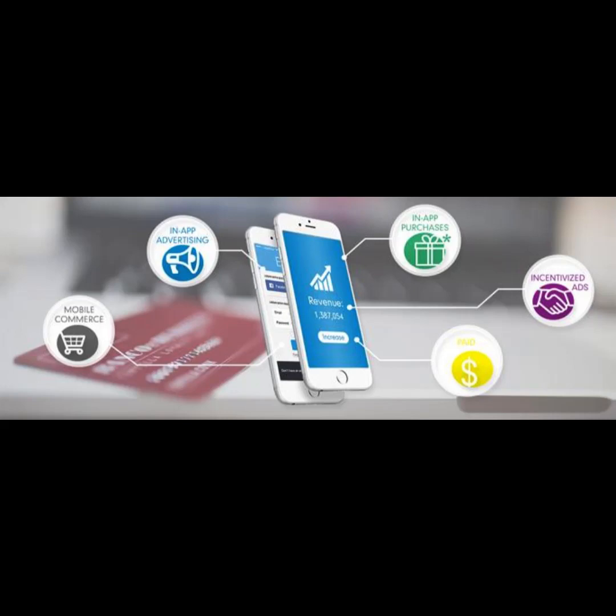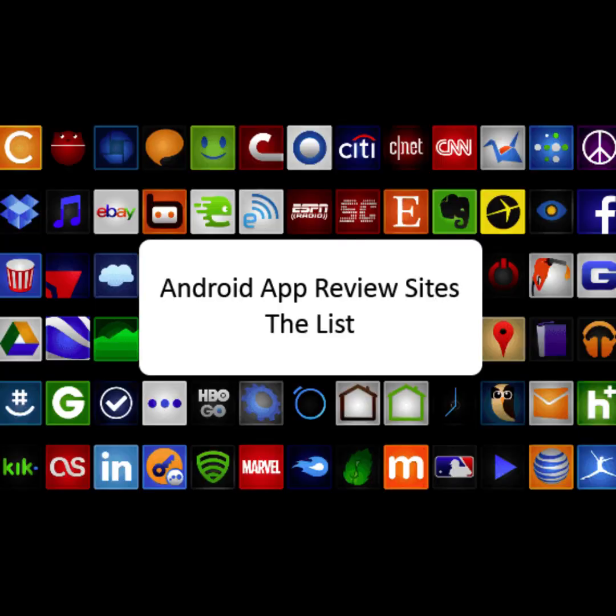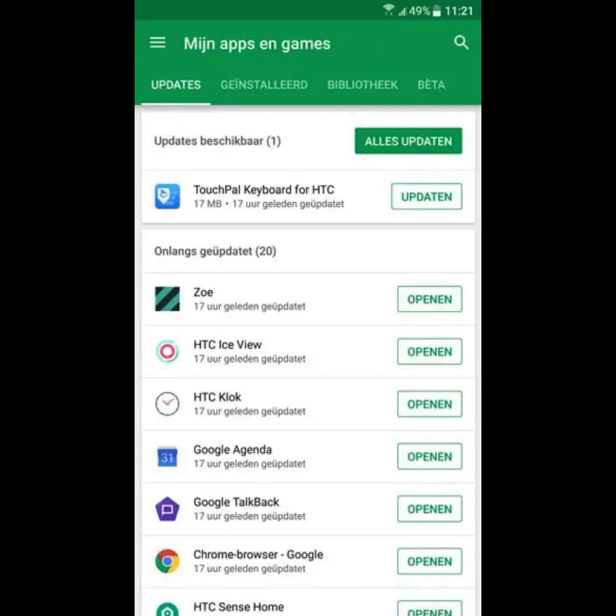Set the price or pricing strategy accordingly. Step five: promote the app through app store optimization (ASO), social media, online advertising, and app review websites. Encourage user reviews and ratings. Step six: provide updates and support. Regularly update the app to fix bugs, improve features, and ensure compatibility with new OS versions. Offer responsive customer support for user inquiries.